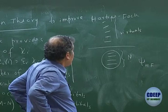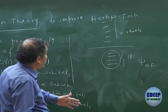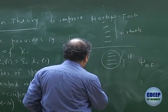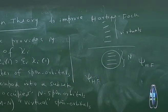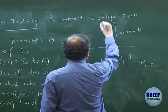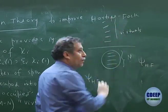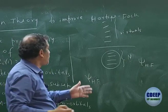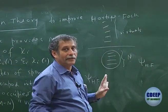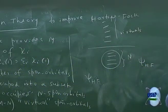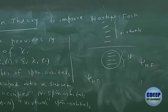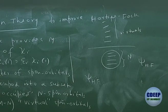Then we are saying that all MCN determinants can be constructed. One of them is of course Hartree-Fock, and the rest can be generated by singly excited, doubly excited, etc. — lifting one electron from occupied to virtual, two electrons from occupied to virtual, and so on, up to N lifted. That is the only way to look at it — maximum you will have all N lifted.